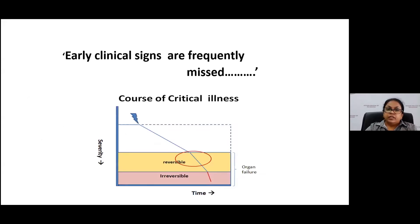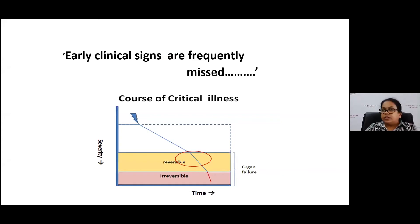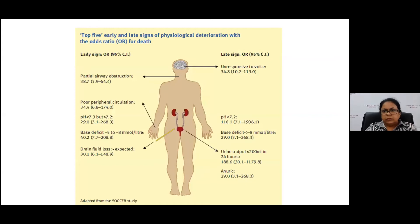The problem is these early clinical signs are frequently being missed by clinical professionals because they fail to identify them at an early stage. The signs and symptoms we are talking about are the usual vital signs used in day-to-day practice: in the respiratory system — respiratory rate, oxygen saturation; in the cardiovascular system — heart rate, blood pressure; in the CNS — level of consciousness; urine output; and so on. Studies have also found a place for pH and base deficit as early and late physiological signs of deterioration.